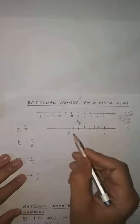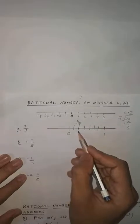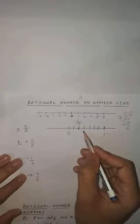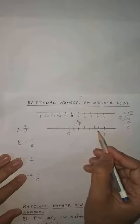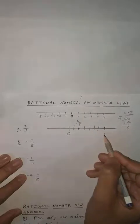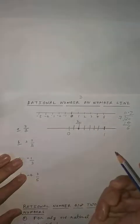Further, you will write down the labels: 1 by 7, 2 by 7, 3 by 7, 4 by 7, 5 by 7, 6 by 7, 7 by 7. So this is correct. First you have to check between which two numbers the rational number lies and into how many equal parts you will divide.